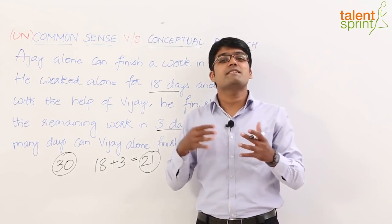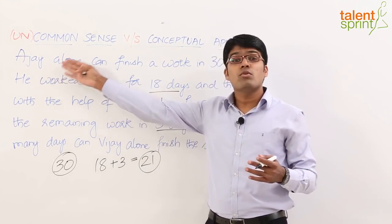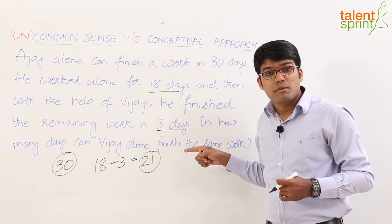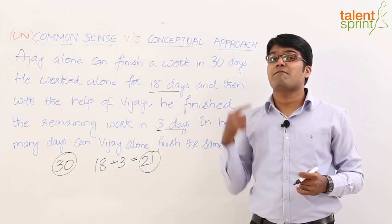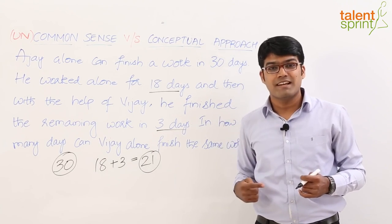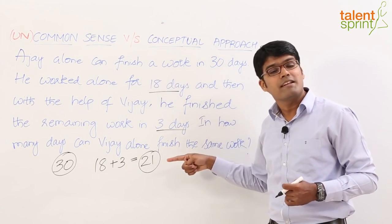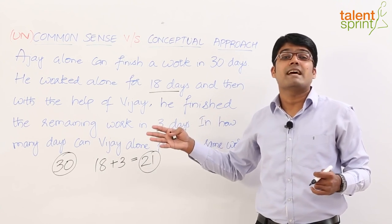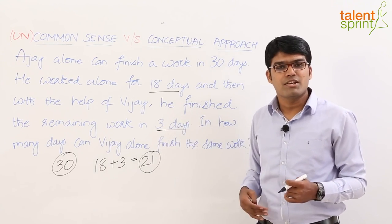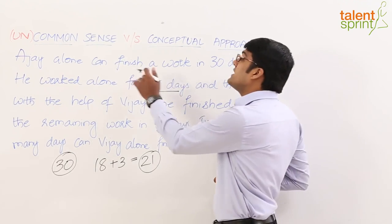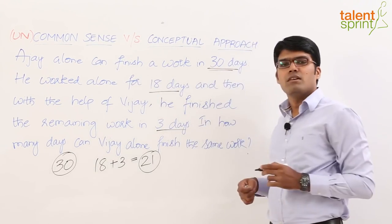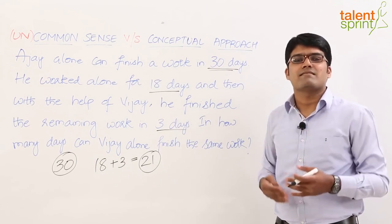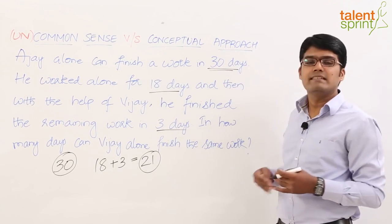If you compare Ajay's and Vijay's capacity, what Ajay could do in 9 days has been finished by Vijay in just 3 days, which means Vijay is 3 times as fast as Ajay. Ajay could finish the remaining part in 9 days but Vijay finished it in just 3 days. So clearly Vijay is 3 times faster than Ajay, which means if Ajay takes 30 days to finish the work, Vijay will finish the total work in just 10 days — 30 divided by 3 equals 10 days.